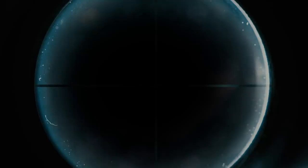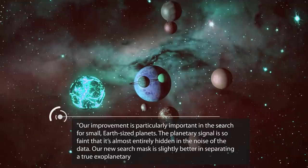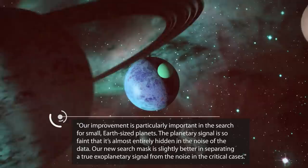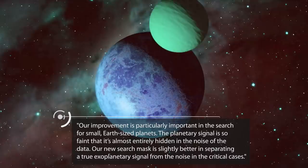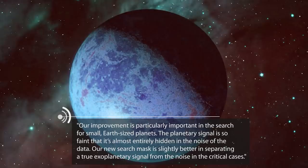Heller explained, our improvement is particularly important in the search for small Earth-sized planets. The planetary signal is so faint that it's almost entirely hidden in the noise of the data. Our new search mask is slightly better in separating a true exoplanetary signal from the noise in the critical cases.